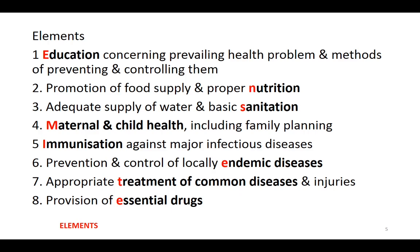The second element is promotion of food supply and proper nutrition, provided through various schemes and programs at different age group levels. Third is adequate supply of water and basic sanitation. Fourth is maternal and child health, including family planning. Fifth is immunization against major infectious diseases. Sixth is prevention and control of locally endemic diseases — for example, in a malaria-prone area, educating communities on mosquito net use and personal protection.